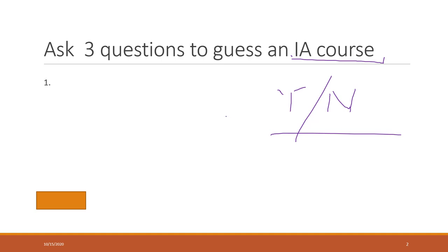You need to ask three yes-or-no questions. The first question is: is this course taught by me? And I say yes. Now you want to narrow down the courses from all I-courses. So the second question is: is the course taught in this semester? And I say no.